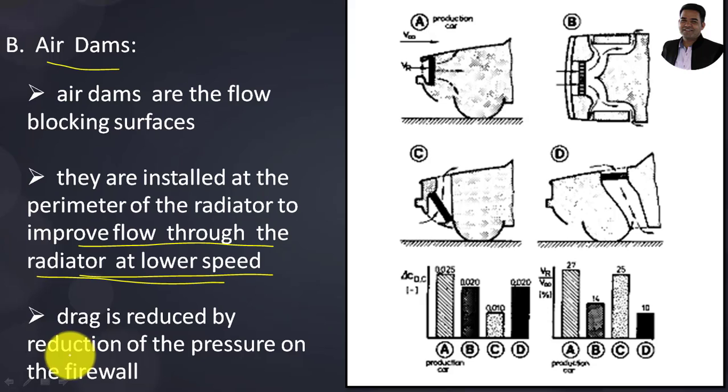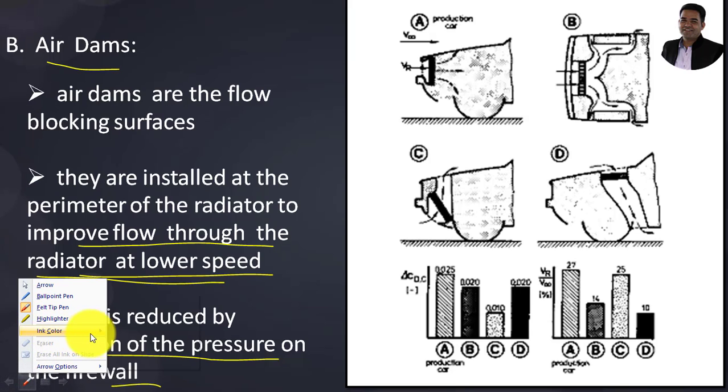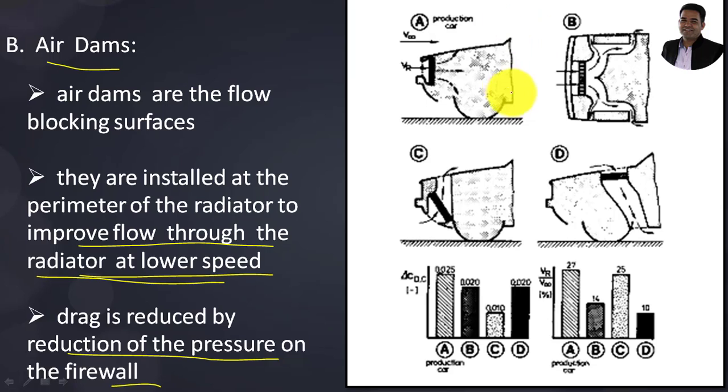Drag is reduced by reducing pressure on the firewall. In this figure, you can observe four types of air dam arrangements implemented on different vehicles. With respect to all these configurations, you can observe the coefficient of discharge values in the plots shown below.